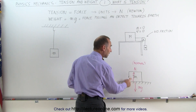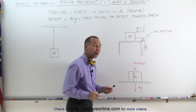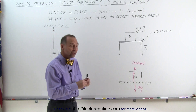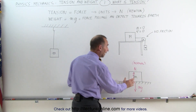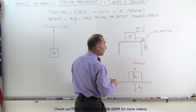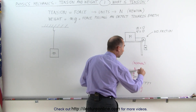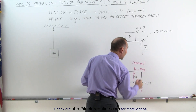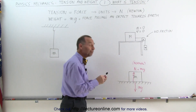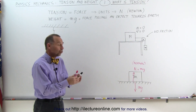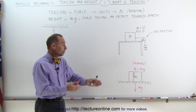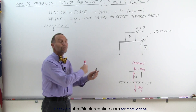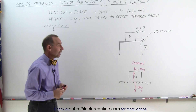The normal force pushes back in the opposite direction as the weight of the object, and those two forces cancel each other out. There is no net force on this object because the normal force equals the weight of the object, simply canceling it out. And since there's no net force, there would be no acceleration — no movement on the object.